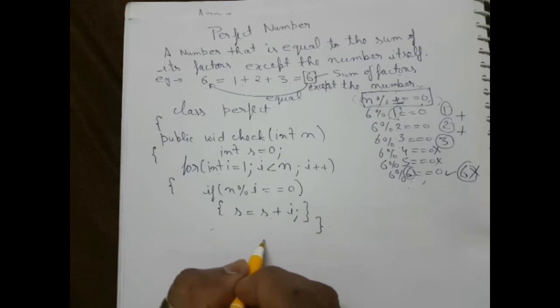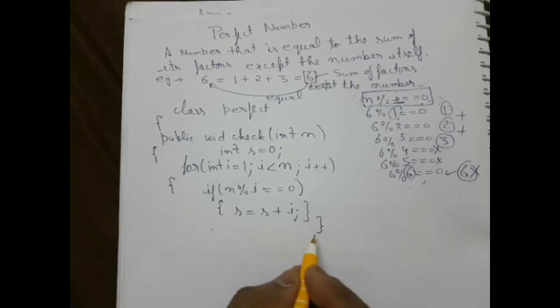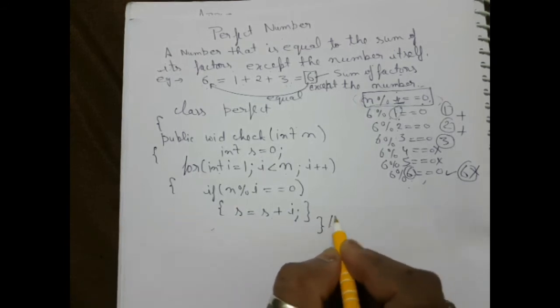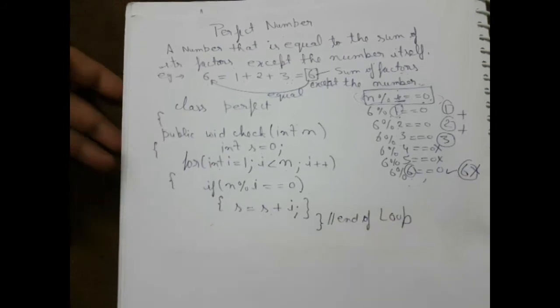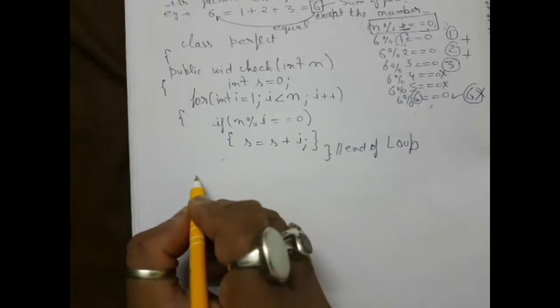After the loop, when this task is over, this is the end of the loop. Then what do we need to do? We have to check if the number is equal to the sum. Then we write system dot out dot println n, and I write n is a perfect number.